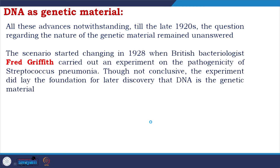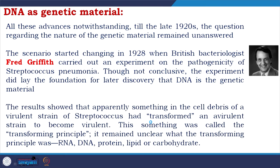The scenario started changing in 1928 when British bacteriologist Fred Griffith carried out an experiment on the pathogenicity of Streptococcus pneumoniae. Though not conclusive, the experiment laid the foundation for the later discovery that DNA is the genetic material. The results showed that apparently something in the cell debris of a virulent strain had transformed an avirulent strain to become virulent. This something was called the 'transforming principle' — it remained unclear whether it was RNA, DNA, protein, lipid, or carbohydrates.